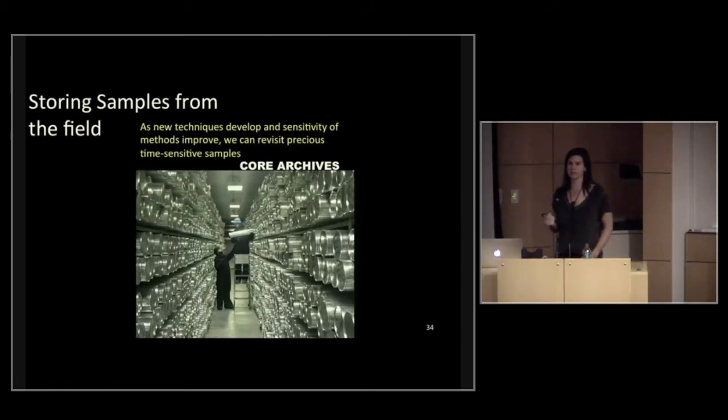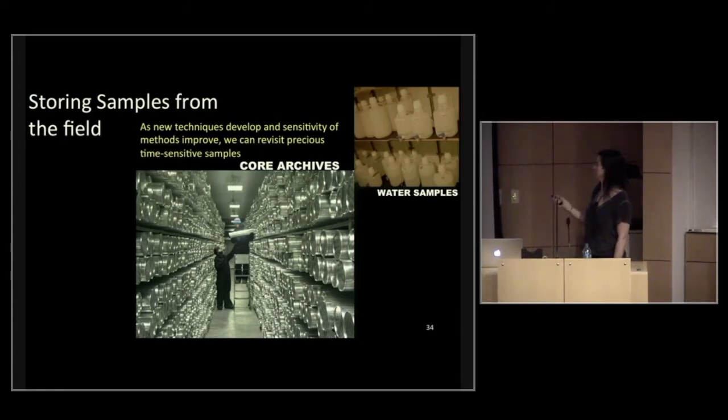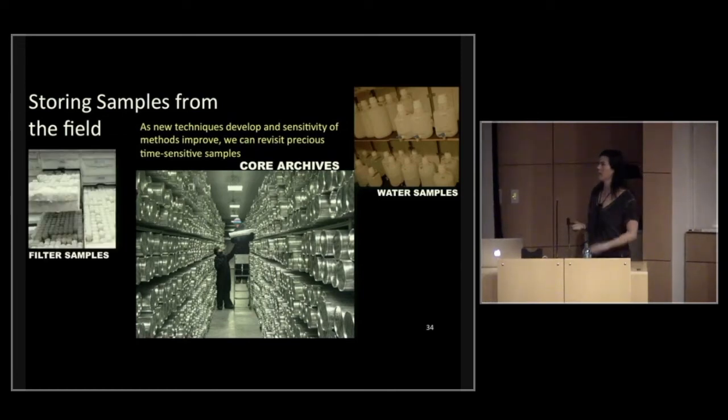Because, again, these boats are so expensive, we do the best to optimize the number of samples we can take. This is a picture of a core archive. These are ice cores, but there are multiple facilities here at UW that have archives of either sediments or ice stacked in freezers. We collect lots of samples. We collect large volumes of water samples. Those, too, get stored for long periods of time. And then we have freezers full of filter samples, which we can always return to if needed. So as these techniques develop through time, potentially the sensitivity or accuracy of a specific method gets better, we can look at those time-sensitive samples and return to them and reinvestigate.